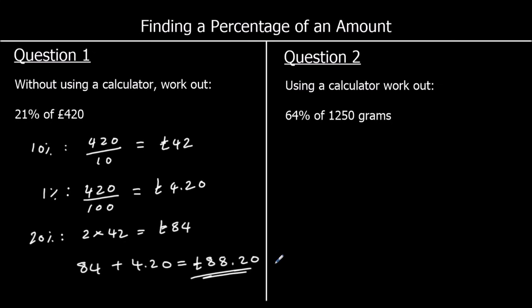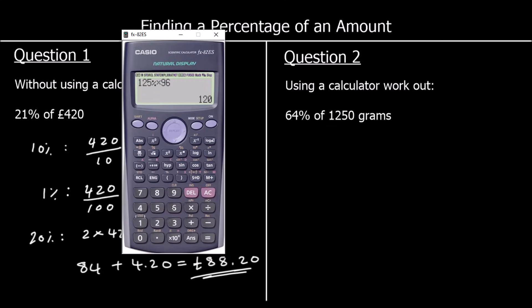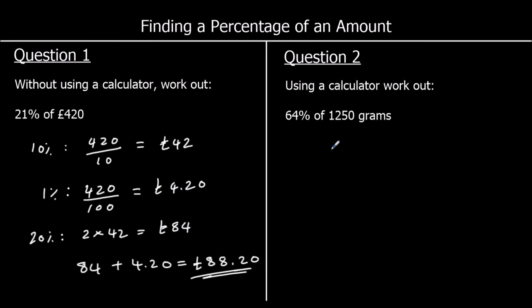Question 2, using a calculator: work out 64% of 1,250 grams. 64% times 1,250 — 'of' means times — gives 800. So we've got 800 grams.